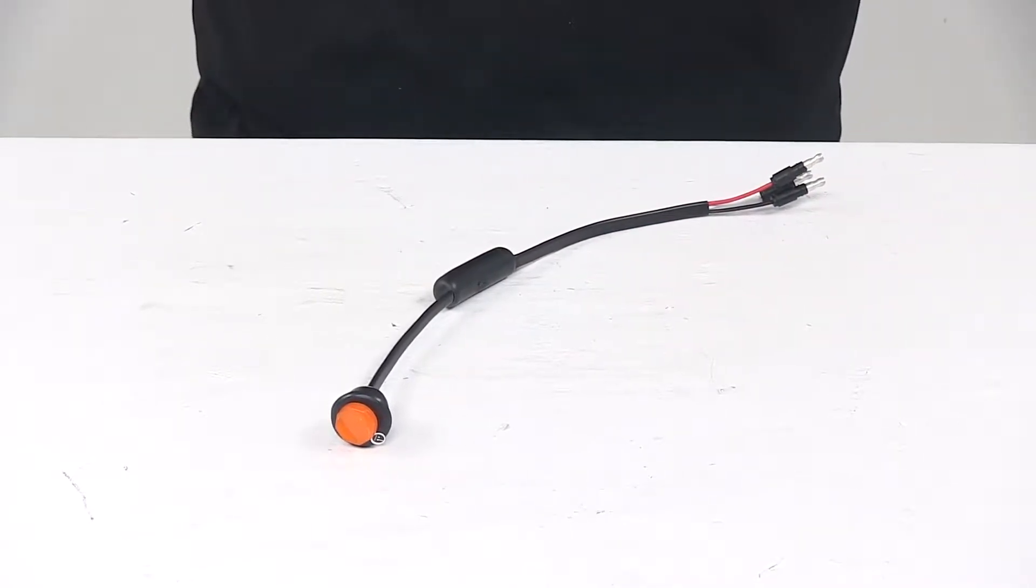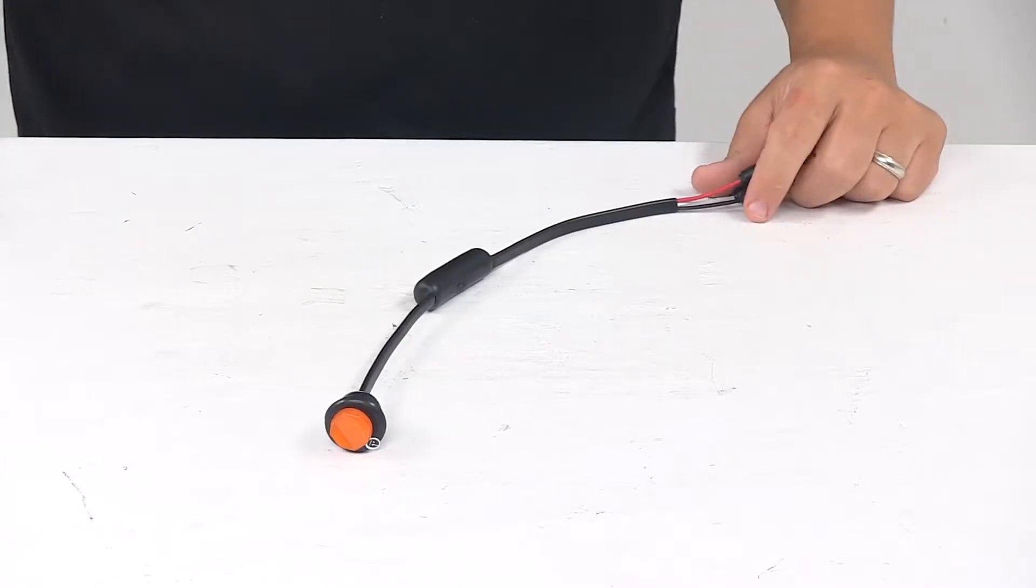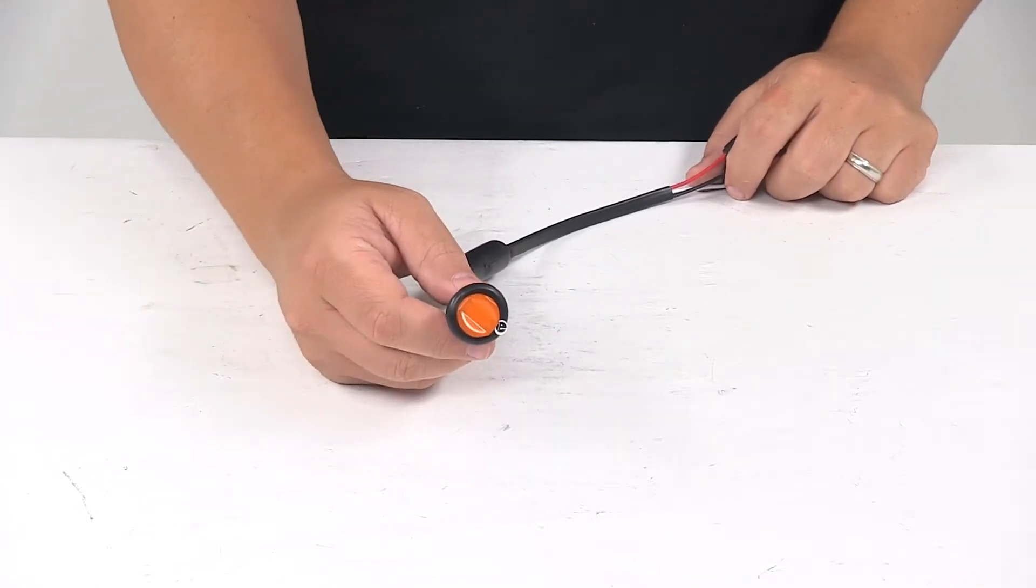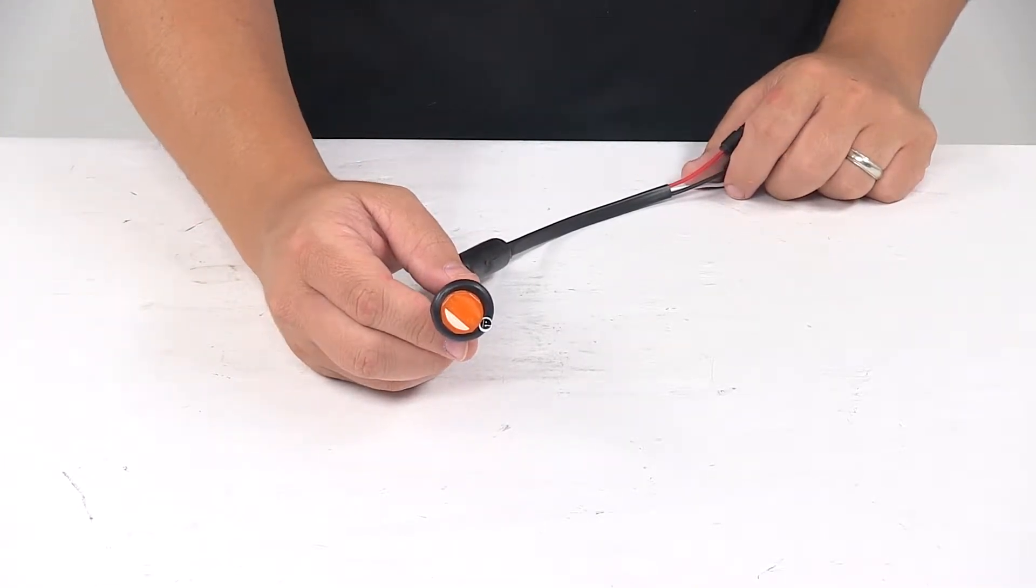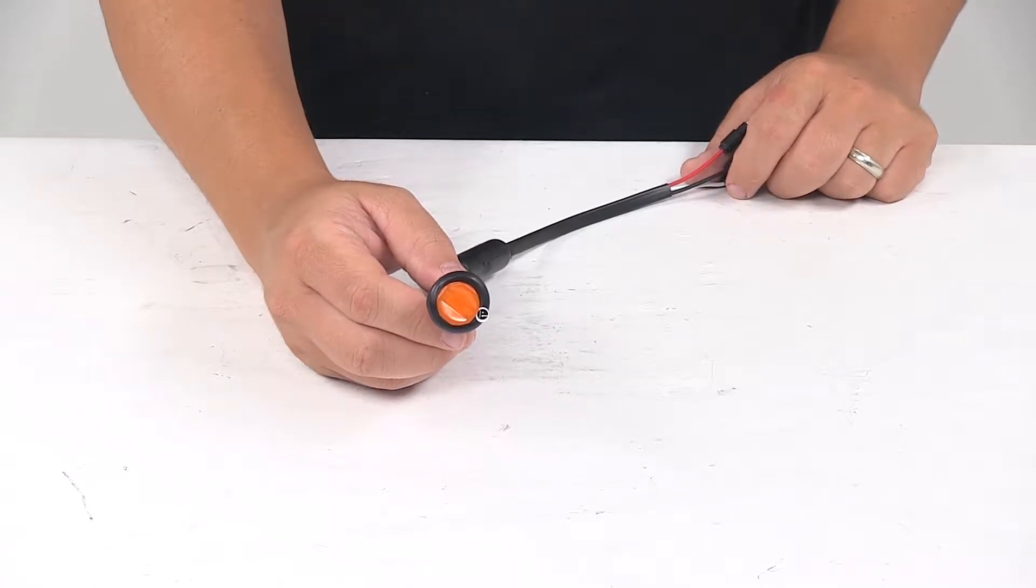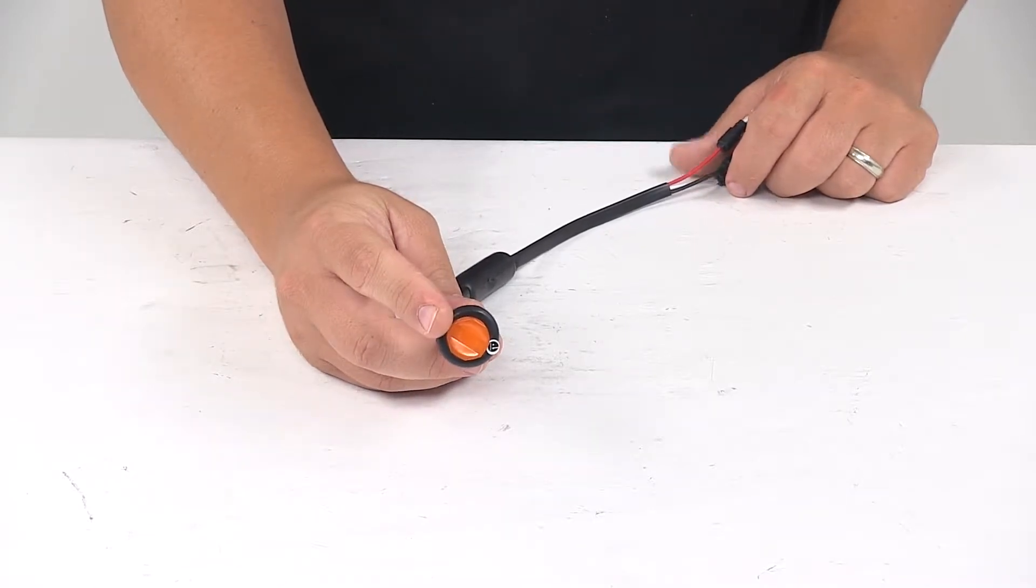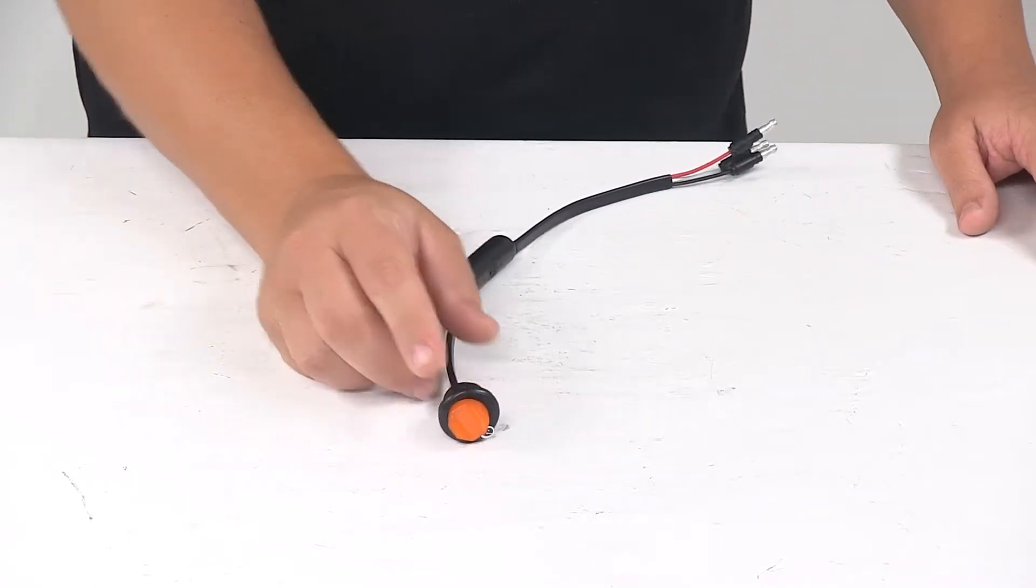Today we're taking a look at the GlowLight Unilight LED Amber Clearance or Side Marker Light. This small round trailer light can function as both a clearance and side marker light when properly mounted. It also functions as a supplemental turn signal.